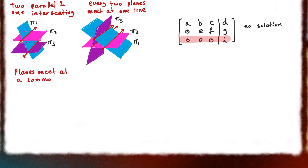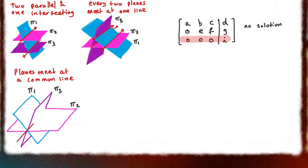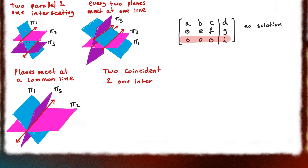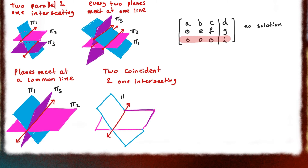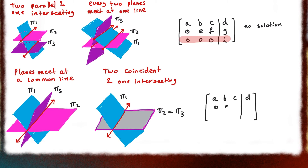The last two situations involve all planes meeting at one particular line. Either all three planes meet at one line, or two planes are coincident and the third intersects them at one line. In both cases, the augmented matrix's last row contains all zeros, leaving two equations that allow you to write the final solution as a parametric line.